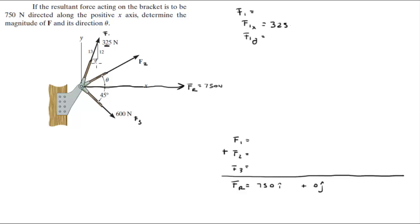And the Y component is 325 times 12 over 13 and that comes out to be 300. So F1 is 125i plus 300j.